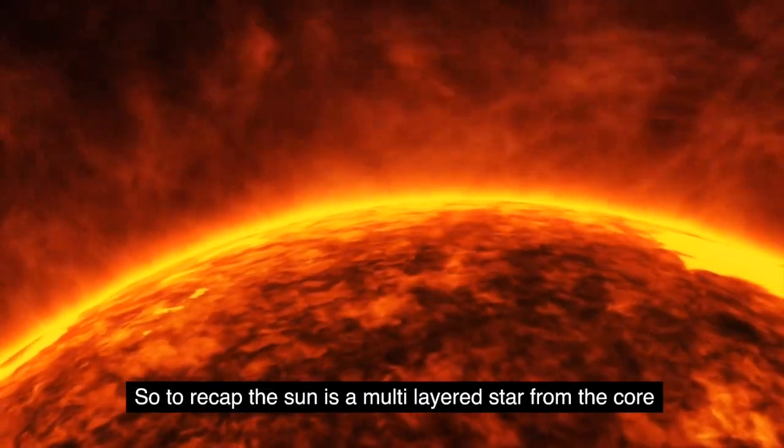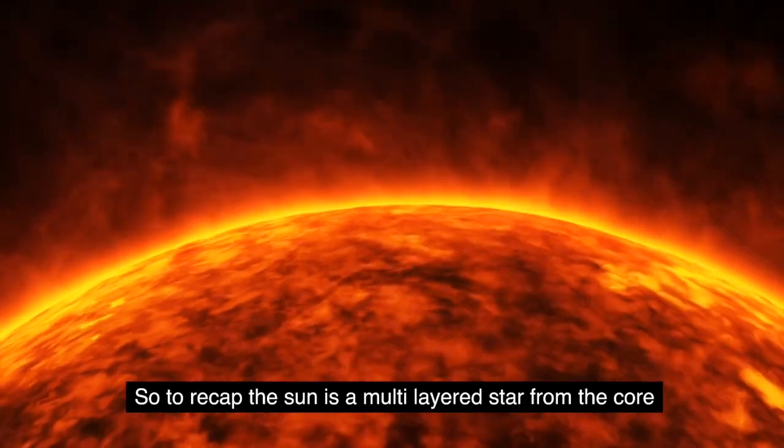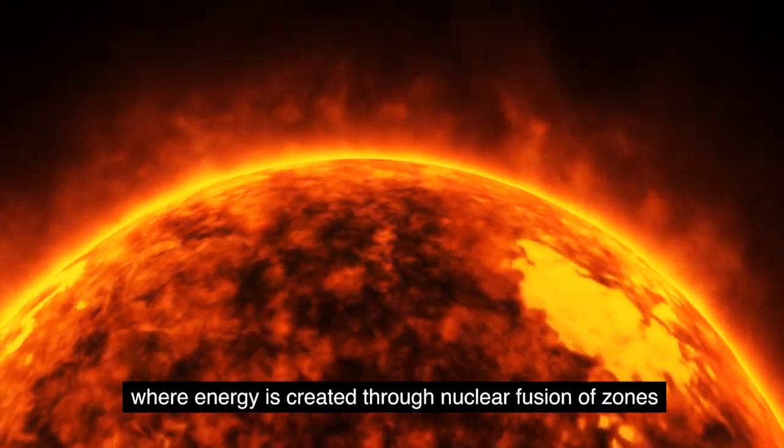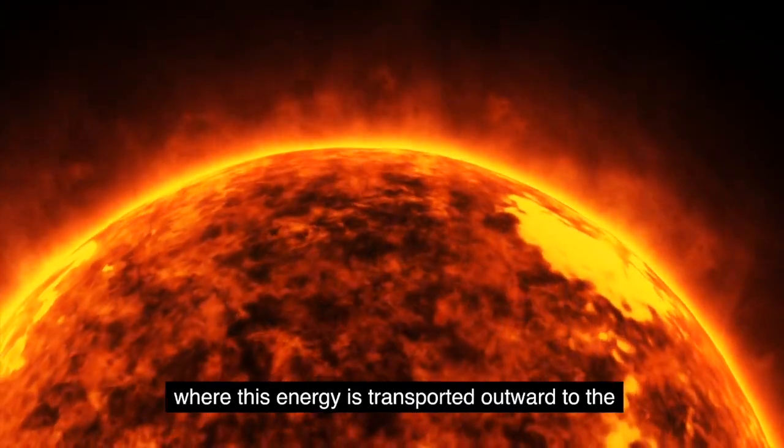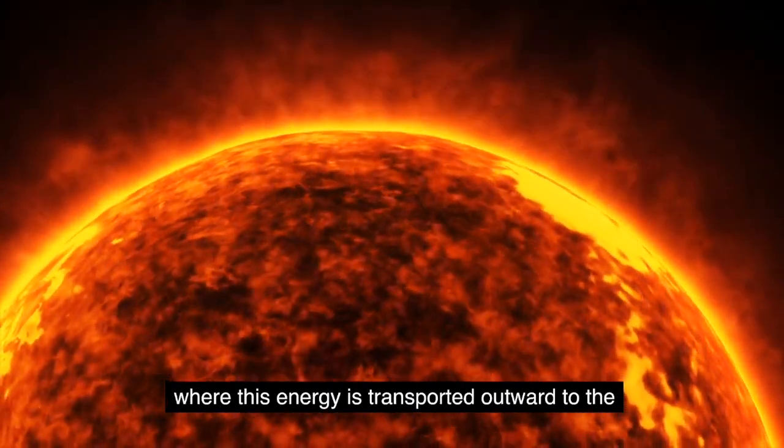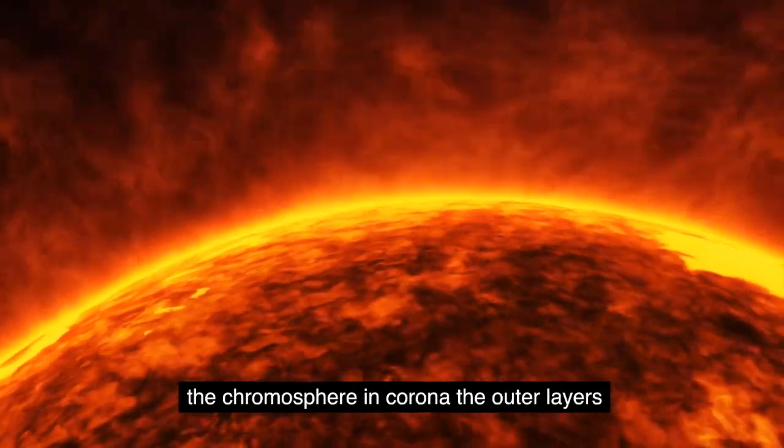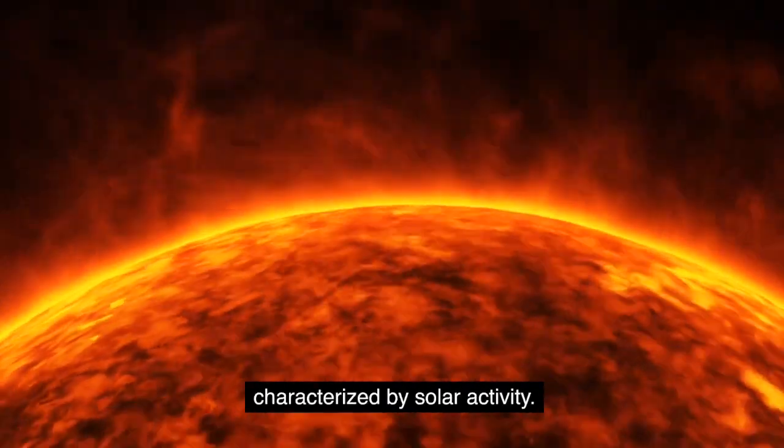So, to recap, the sun is a multi-layered star, from the core, where energy is created through nuclear fusion, to the radiative and convective zones, where this energy is transported outward, to the photosphere, which emits the sun's light, and finally to the chromosphere and corona, the outer layers characterized by solar activity.